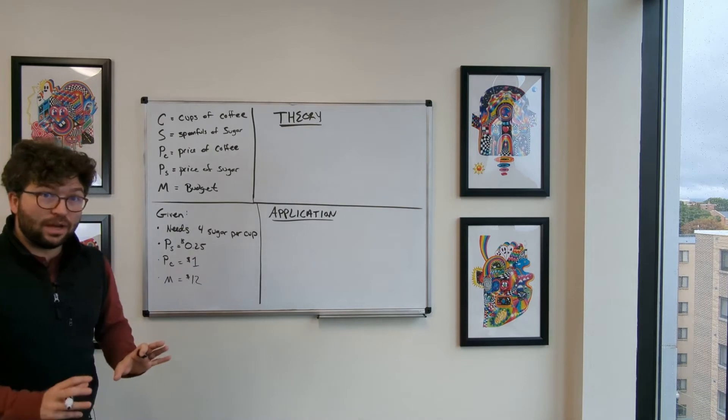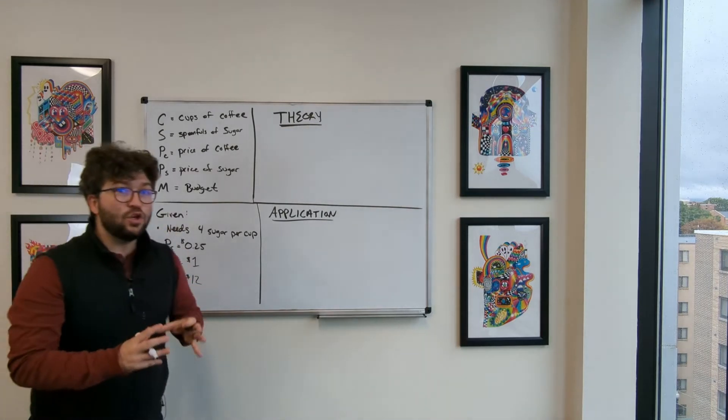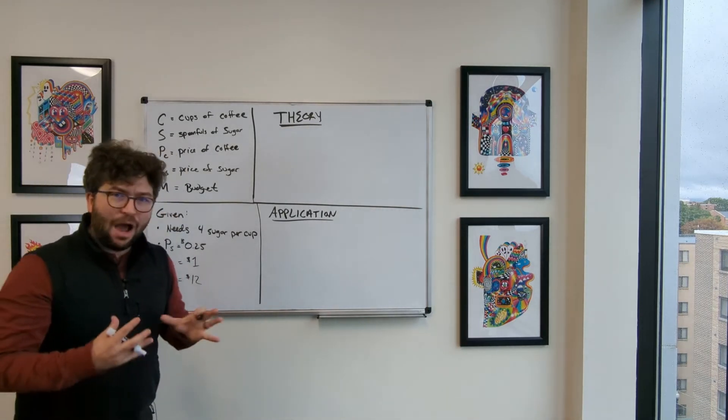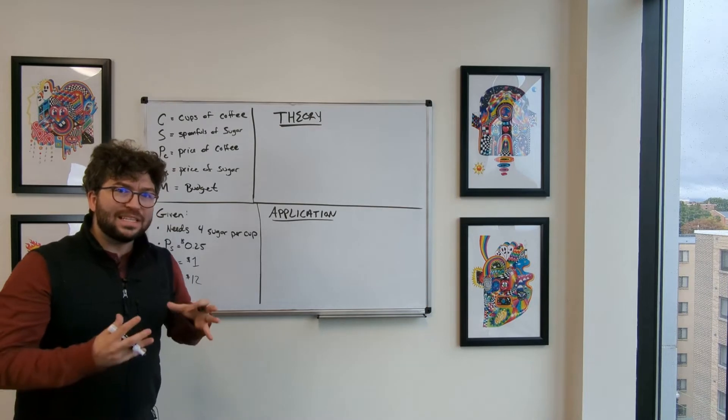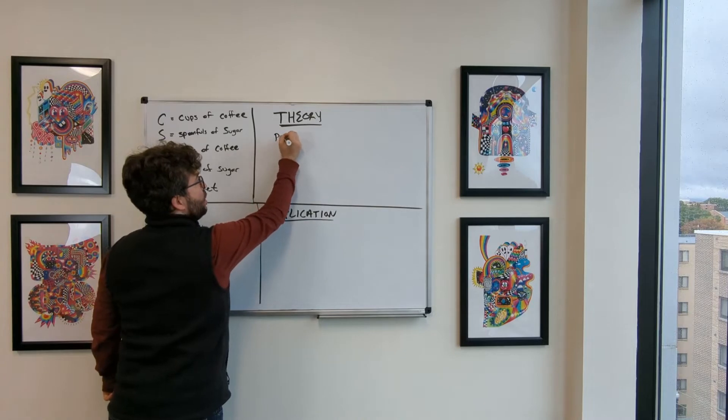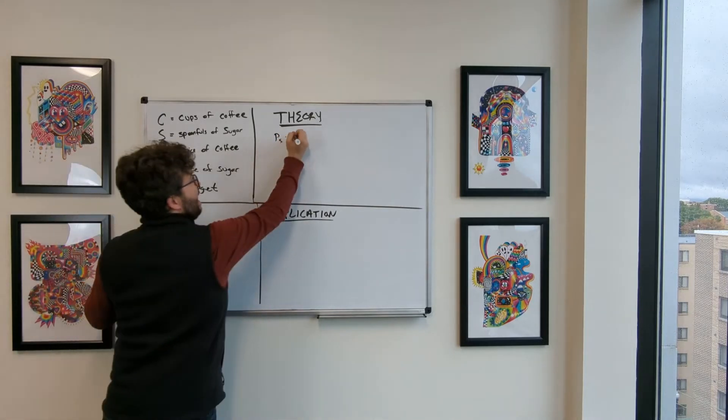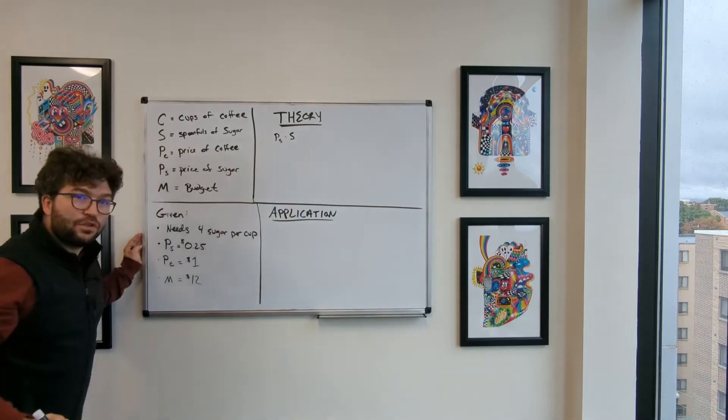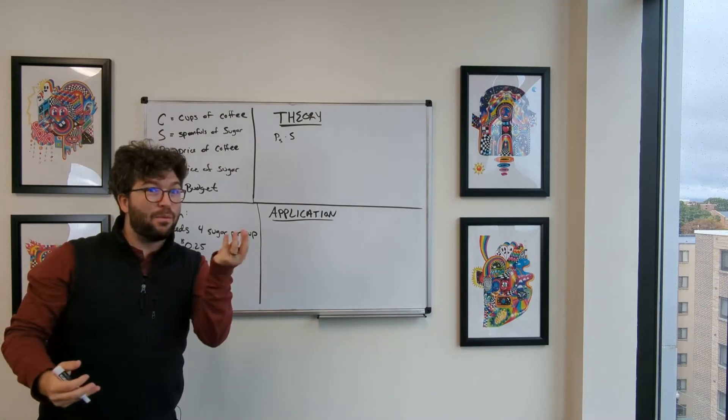The theory is showing us that we need to use all of our budget. How do we figure that out? Let's think about what we're spending. We know that the price of sugar multiplied by the number of spoonfuls of sugar that we end up purchasing is the amount we'll spend on sugar.